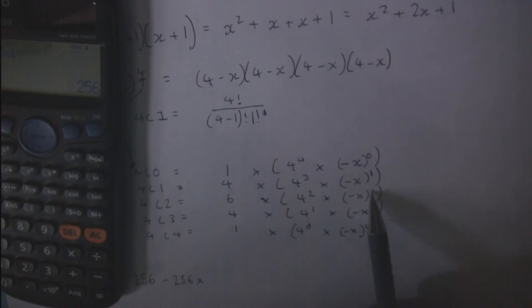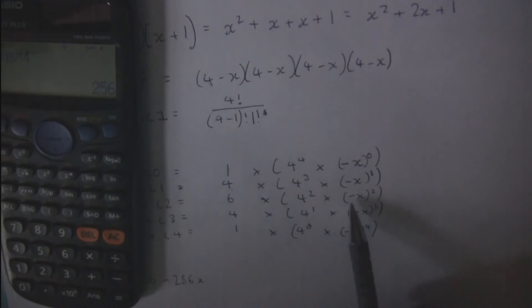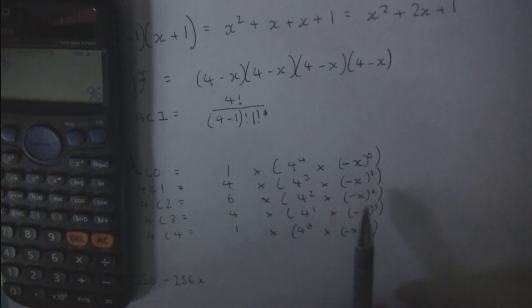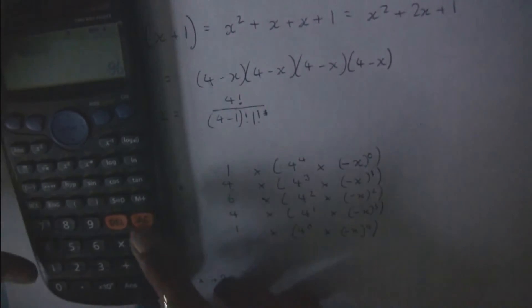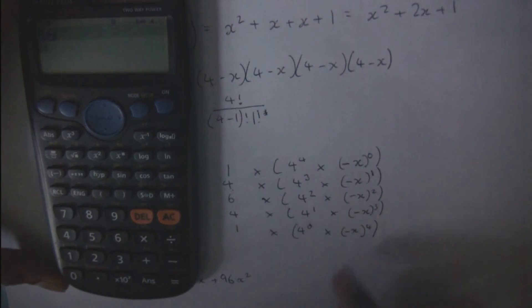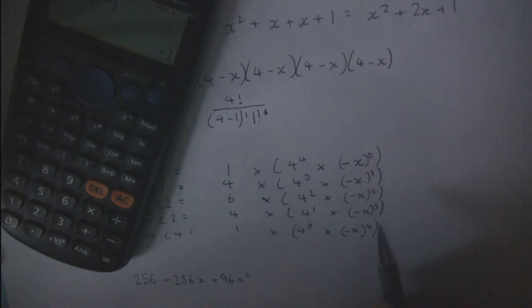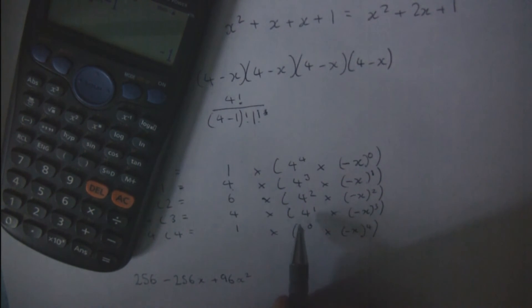For the third term, you have (minus x) squared. Minus 1 times minus 1 is 1, so the coefficient becomes positive. 4 squared is 16, and 16 times 6 equals 96. So you get positive 96x squared. For the fourth term, minus 1 cubed is minus 1, and x cubed is x cubed. 4 to the power of 1 is 4, so you have minus 1 times 4 times 4, giving minus 16x cubed.